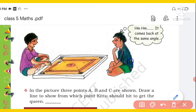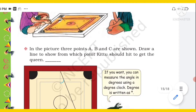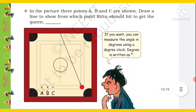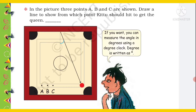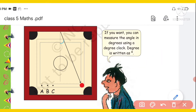Who is thinking? In the picture, three points A, B, C are shown. You can see the carom board — three dots A, B, C. Draw a line to show from which point Kittu should hit to get the queen. We need to tell you where to hit to get the queen.